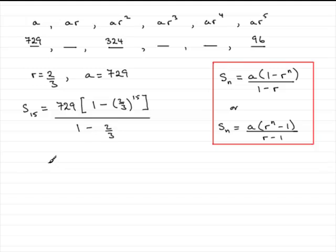Do this on your calculator, and what you should end up with is 2182.005, and so on. And if we round this to 4 significant figures, what we're going to have is 2182. That's the 4 significant figures, 4SF for short.